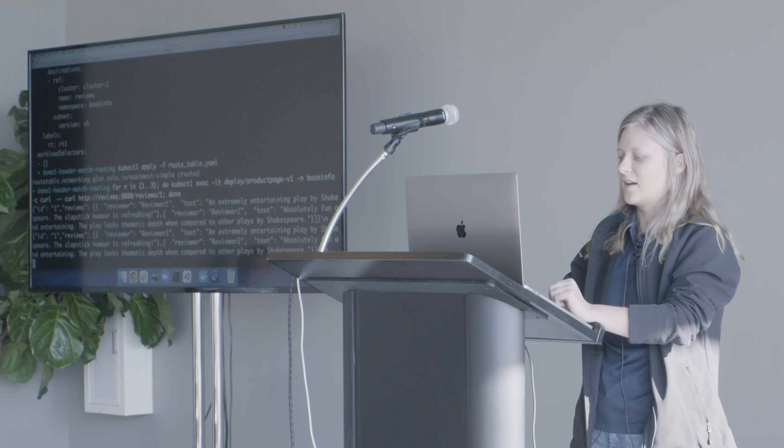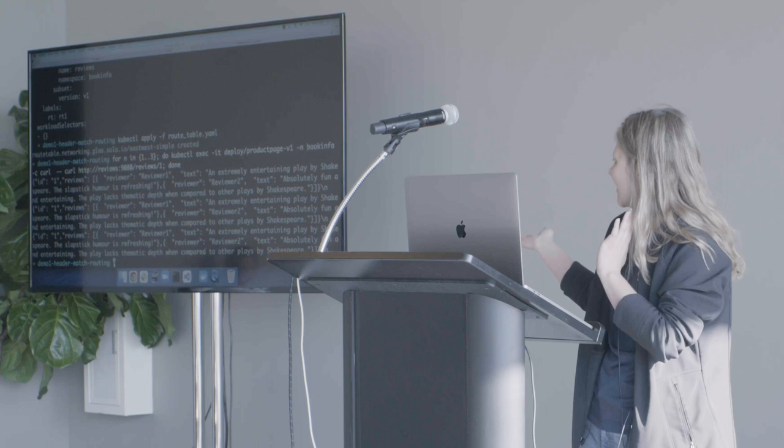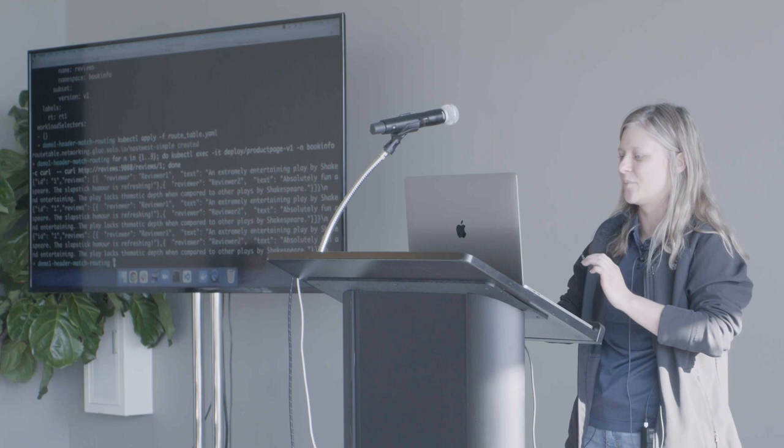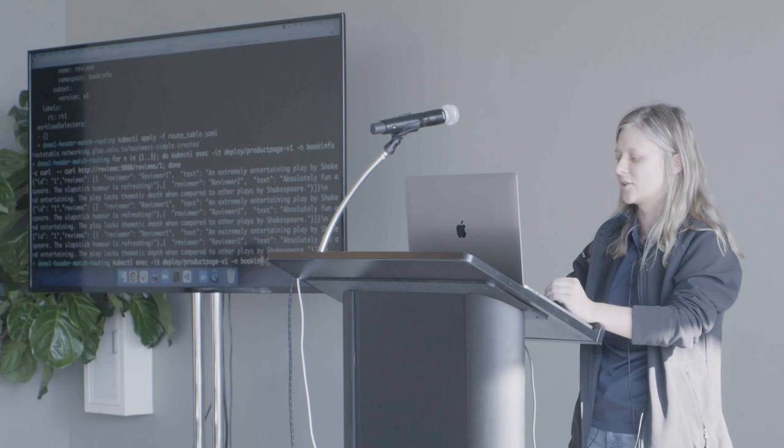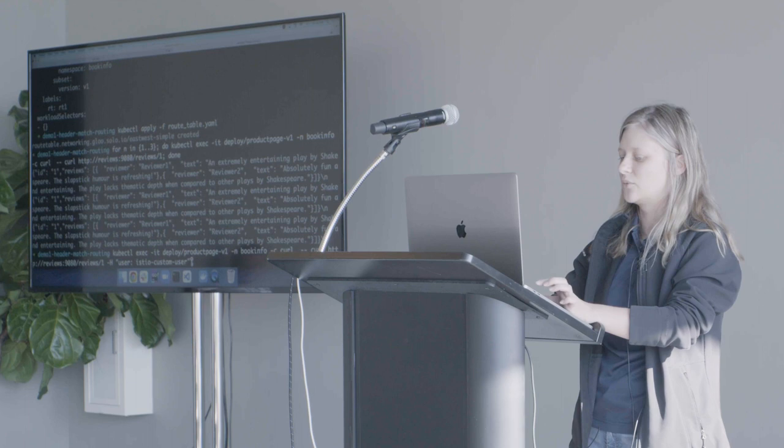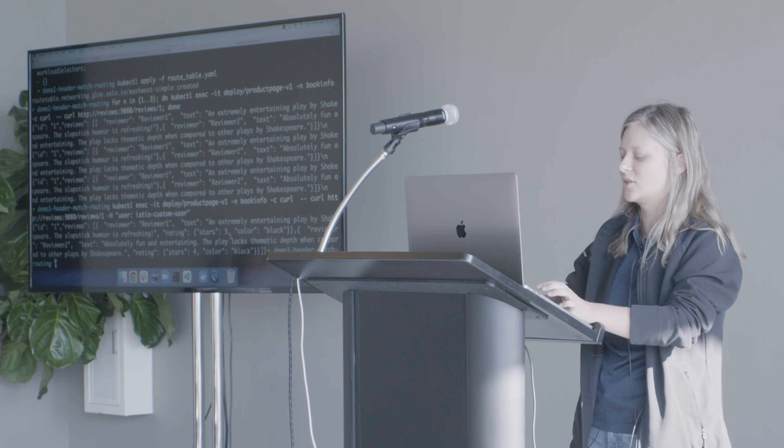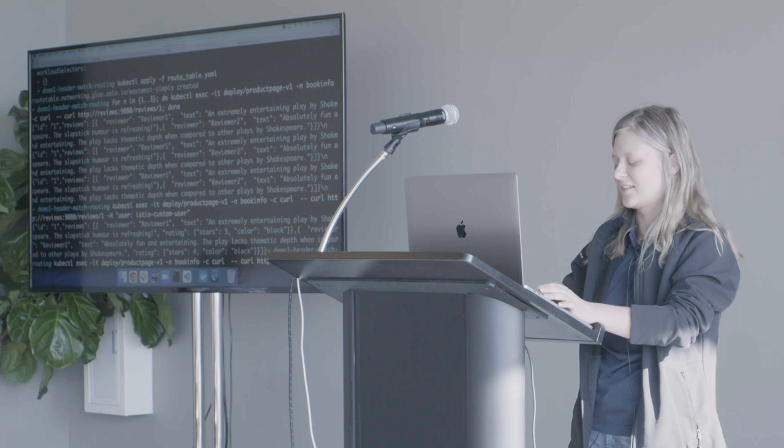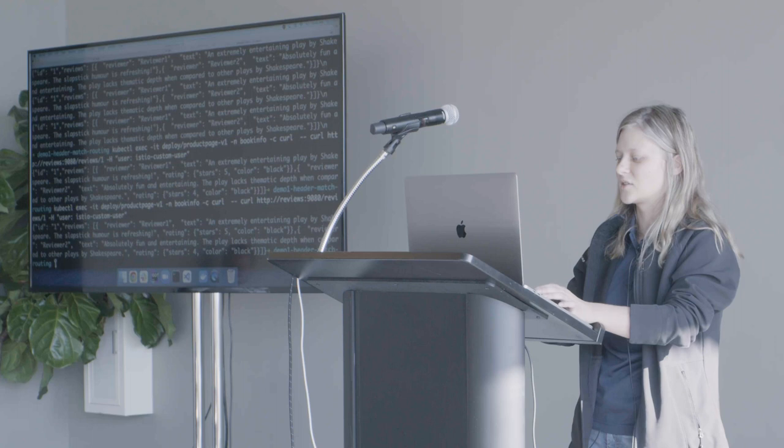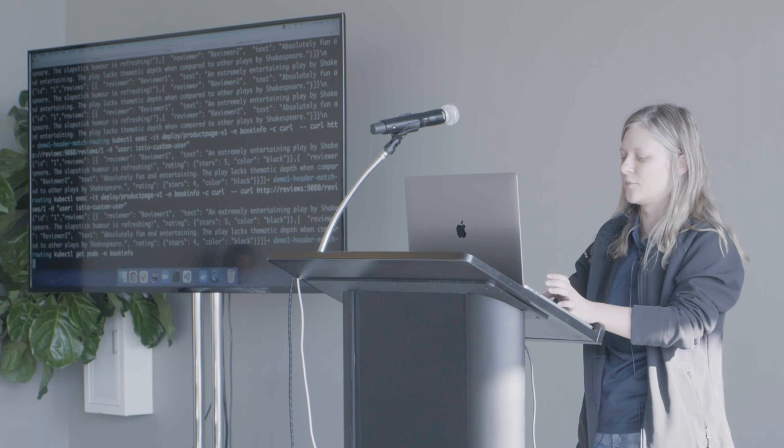That's very slow because of the wifi. And you might notice that there aren't any stars associated with this. So it seems like our subset match worked because we didn't have the header in this request. So now let's try a request with the header included. So again, going from product page through the curl container to reviews and then here we have our black stars that returned and let's just do that one more time for sanity check, just to make sure it's consistent. So again, with the header, we should get our black stars back. Cool. Okay. So what happened behind the scenes?